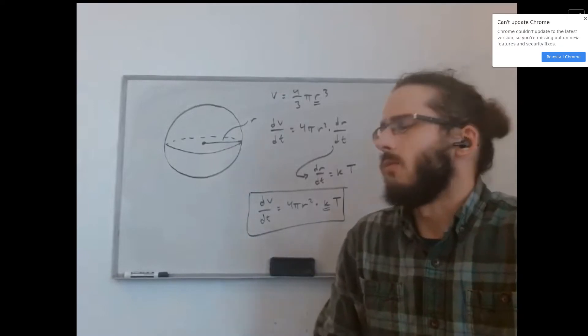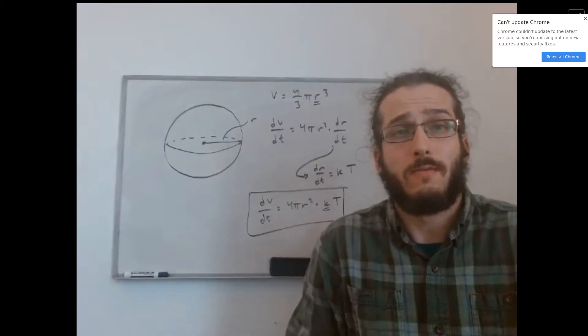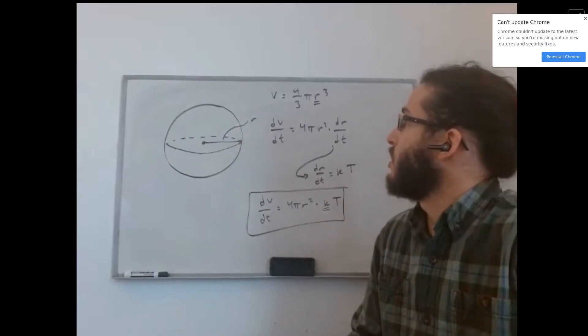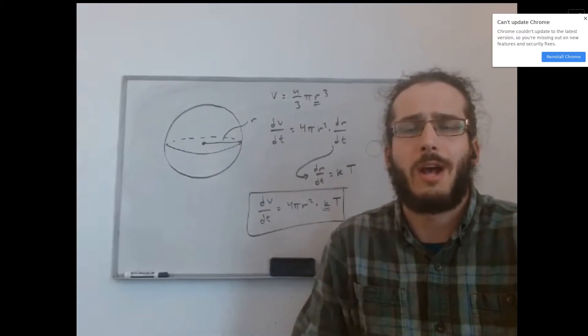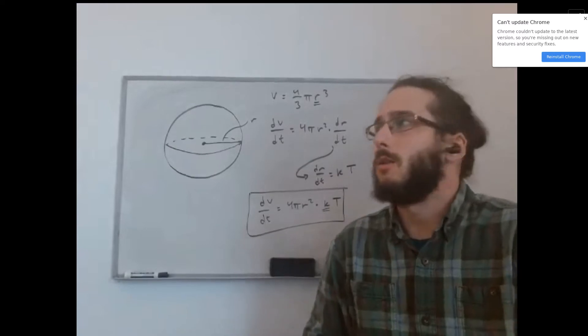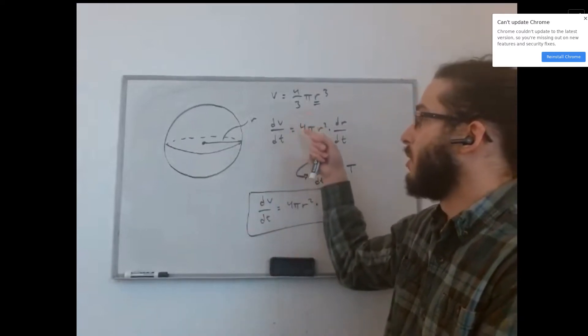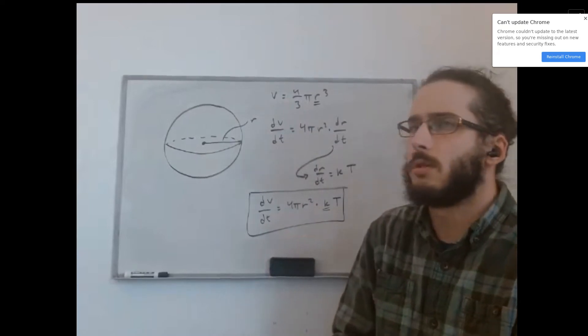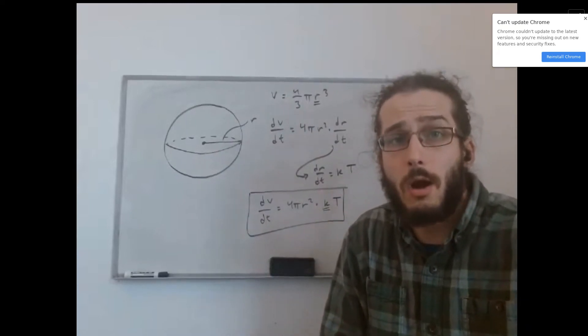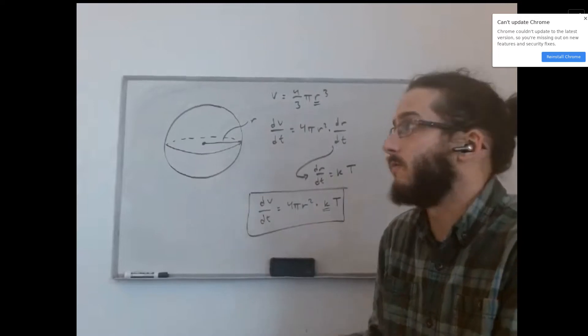So to begin with, when we are trying to find the rate of change of a quantity, we first need to write an expression that we use to calculate the value of that quantity. And in this case, since we're talking about the volume of a sphere, you might remember that the volume of the sphere is given by the expression four-thirds pi r cubed, where r is the radius of the sphere.